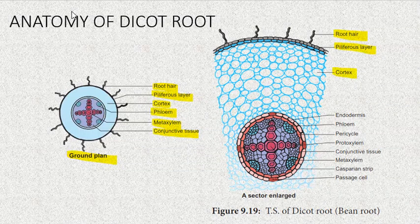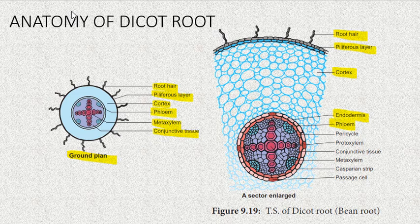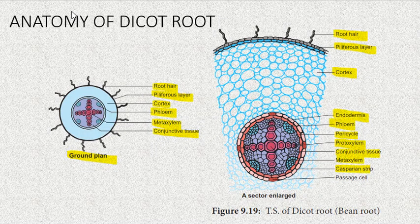Then comes cortex, endodermis, phloem, conjunctive tissue, metaxylem, and casparian strip or passage cell.